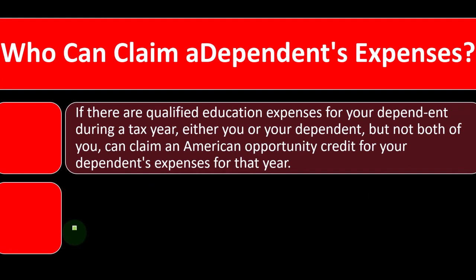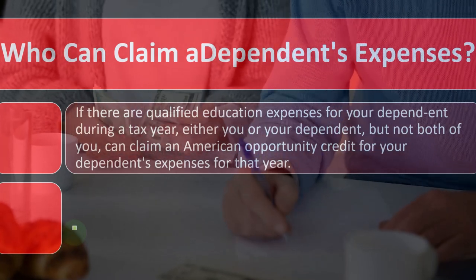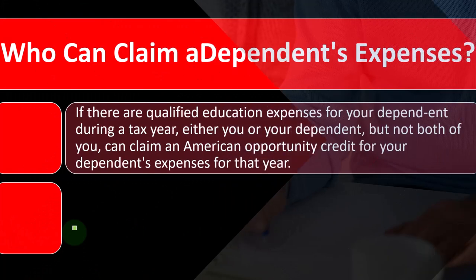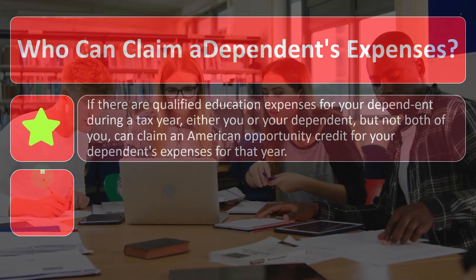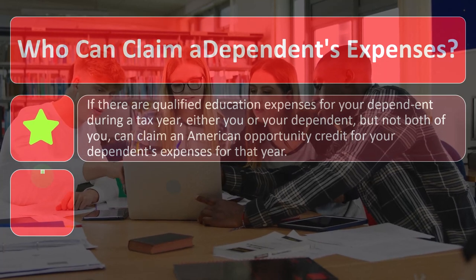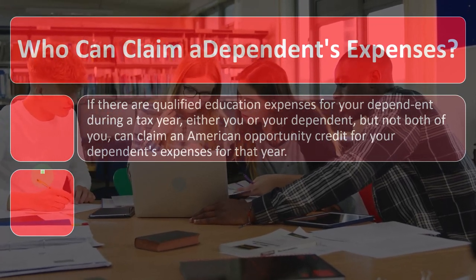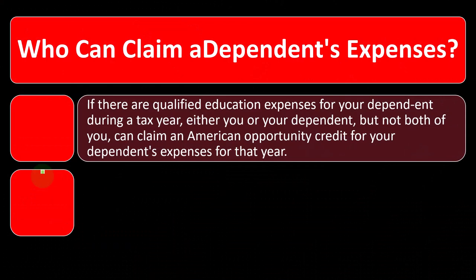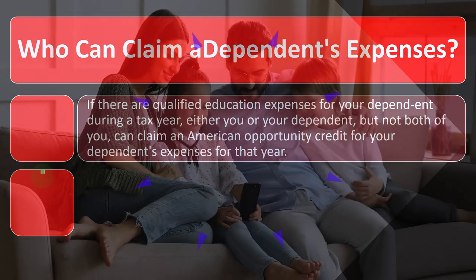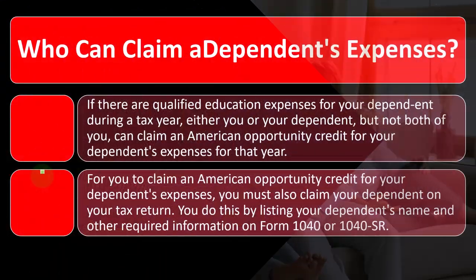We're talking about the American Opportunity Credit and asking: who can claim a dependent's expenses? If there are qualified education expenses for your dependent during a tax year, either you or your dependent — but not both — can claim an American Opportunity Credit for that dependent's expenses for that year. The expenses are tied to one social security number, and you can't double-dip by claiming the same expenses on two different returns.